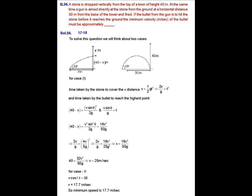Question number 56. A stone is dropped vertically from the top of a tower of height 40 metres. At the same time, a gun is aimed directly at the stone from the ground at a horizontal distance of 30 metres from the base of the tower and fired. The bullet from the gun is to hit the stone before it reaches the ground. We have to find out the minimum velocity of the bullet. To solve this, we consider two cases shown in the figures.